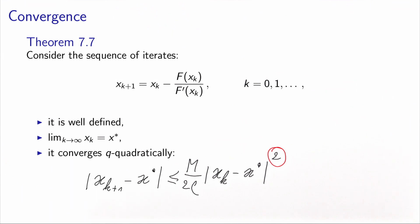The notion of q-quadratic convergence comes from the squared term, meaning that at each iteration the precision of the solution is doubled. The quality of this convergence changes with m: if m is small — meaning the function is close to being linear — the convergence will be faster. If m is bigger, meaning a very non-linear function, Newton's method will be slower.